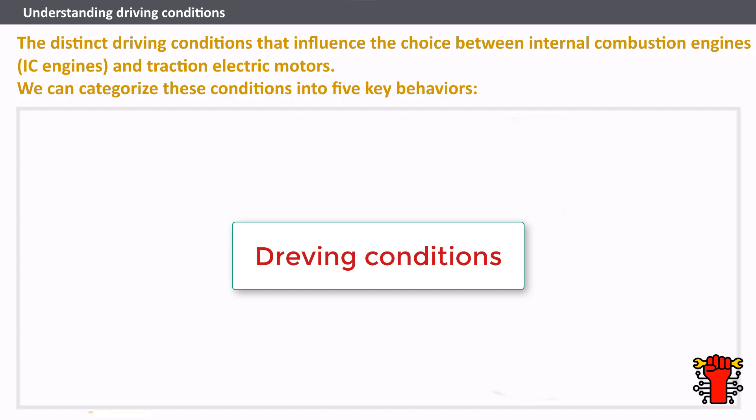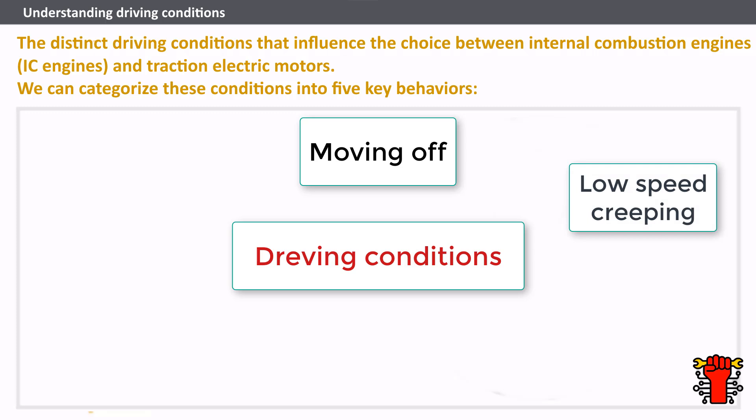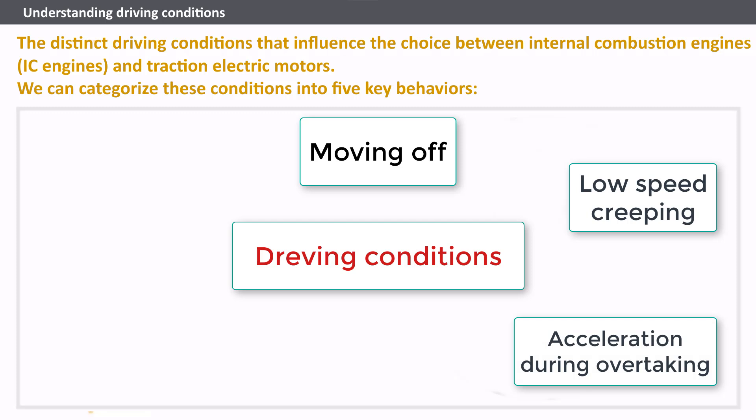These components are often referred to as power plants, and before making a selection it's crucial to understand the vehicle's driving conditions. We can categorize these conditions into five key behaviors: moving off — the vehicle accelerates from a standstill, a crucial characteristic that heavily influences power plant selection; and low-speed creeping, common in city traffic, involving frequent acceleration and braking in slow-moving conditions.